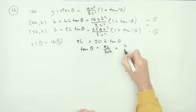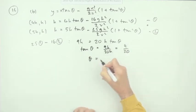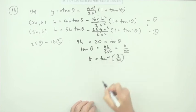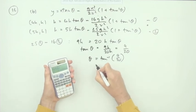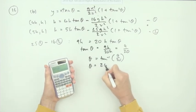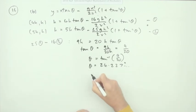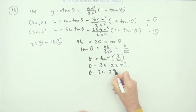Theta is inverse tan 9 upon 20. If you pop that in your calculator, you get the angle of projection is 24.227 and so on. Theta equals 24.2 degrees.